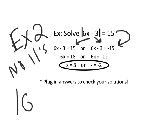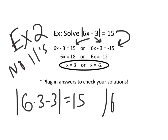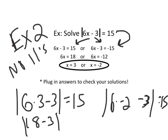When you plug these in to check: 6 times 3 minus 3 equals 15, and 6 times negative 2 minus 3 also equals 15. You get 18 minus 3, which is 15 — the absolute value of 15 is 15. Then negative 12 minus 3 is negative 15, and the absolute value of negative 15 is positive 15. Both solutions check out, so your answers are 3 and negative 2.